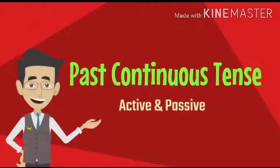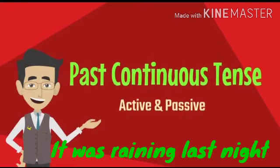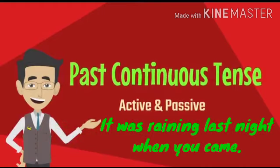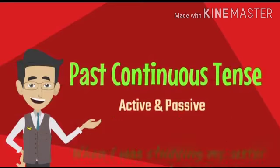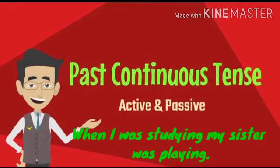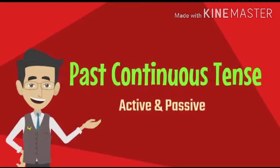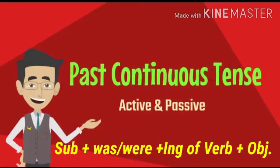Now let's understand the next tense: past continuous. Past continuous is used to denote a temporary activity in the past — for example, 'It was raining last night.' It is also used to denote a temporary activity interrupted by a short action — 'It was raining last night when you came.' It is also used for two simultaneous activities in the past — 'When I was studying, my sister was playing.' The formula is: subject plus was/were plus V-ing plus object.